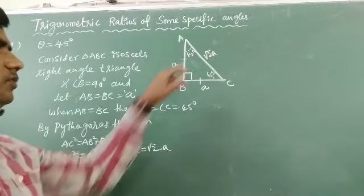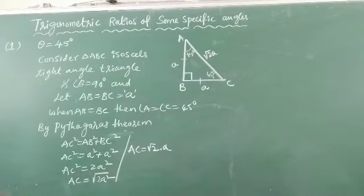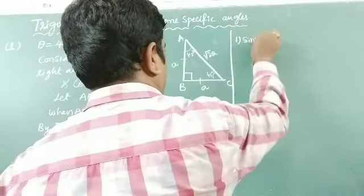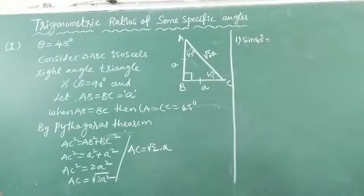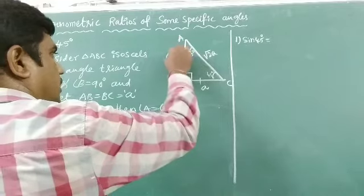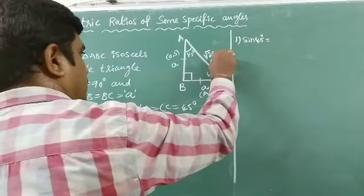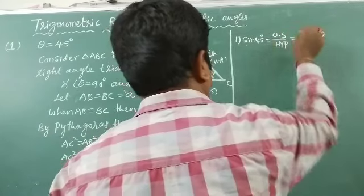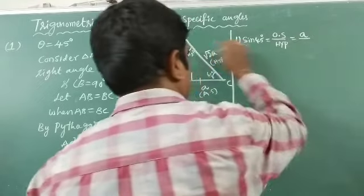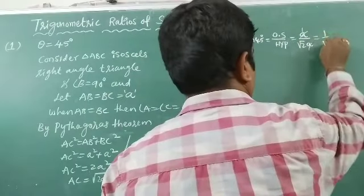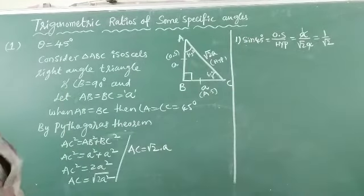Now we know the three sides of the right angle triangle and the angle is 45 degrees, so we can find the six trigonometric ratio values. First, sine 45 degrees. Sine theta means the ratio of opposite side to hypotenuse. Taking this angle as 45 degrees, the opposite side length is a and the hypotenuse length is √2 · a. So a divided by √2 · a — the a's cancel — giving 1/√2. Therefore, sine 45 value is 1/√2.